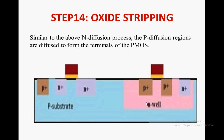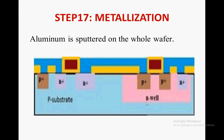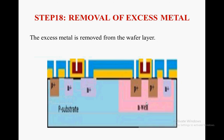Similar to the N-diffusion process above, P-diffusion regions are diffused to form the terminals of the PMOS. Thick field oxide is then formed in all regions except the terminals of PMOS and NMOS. Next is metallization — aluminium is sputtered on the whole wafer, and then the excess metal is removed from the wafer layer.